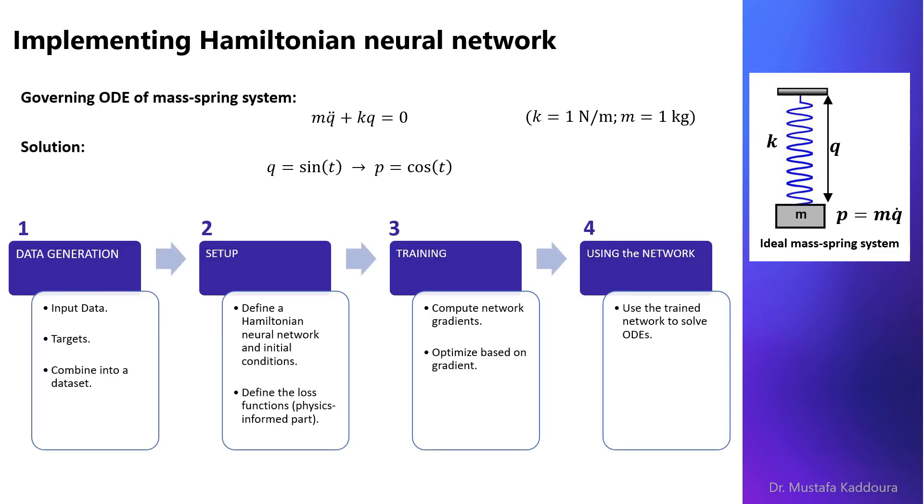Second step is the setup, in which we define the neural network architecture and we define our loss function. Third step is training, in which we compute the gradients of the network and we optimize based on the computed gradients. And finally, we use the trained network to solve the differential equation.